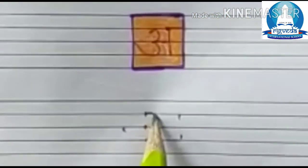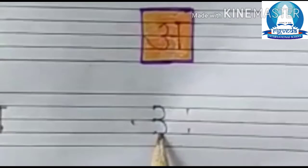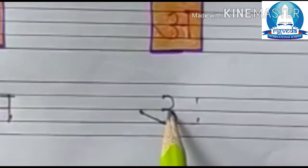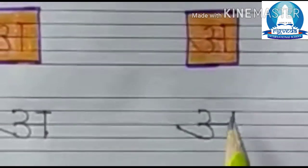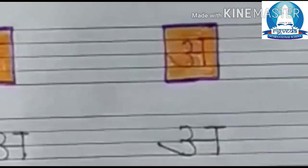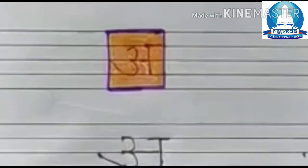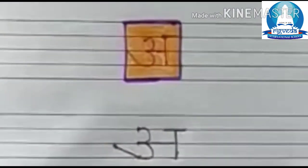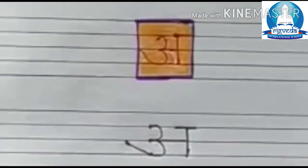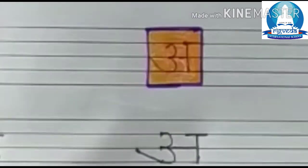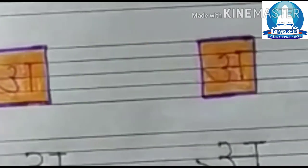Again: firstly make a curve, a big curve and touch to the line, make a slipping line and a standing line. Again: firstly make a curve, a big curve, touch to the line, then make a slipping line and a standing line. This is Ursi Anar.